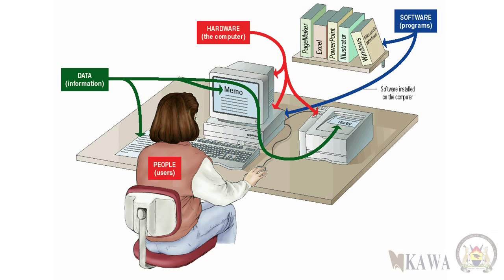Just know that a computer can convert data into information that is useful to you as a person. I'm so excited to show you how it does that in this simple illustration. A computer has four major parts: the first part is hardware, the second part is software, the third part is data, and the fourth part — the greatest part of a computer — is you, the user. Did you know that you're also part of a computer?